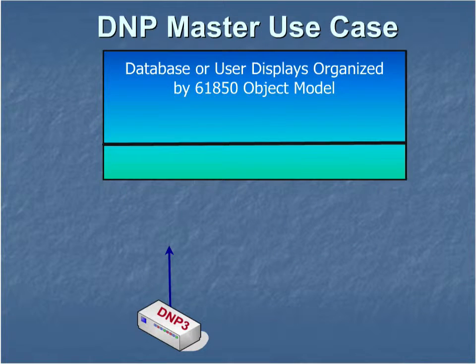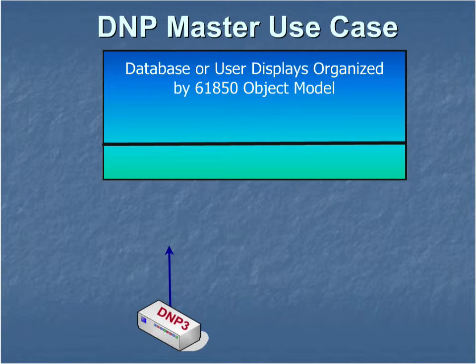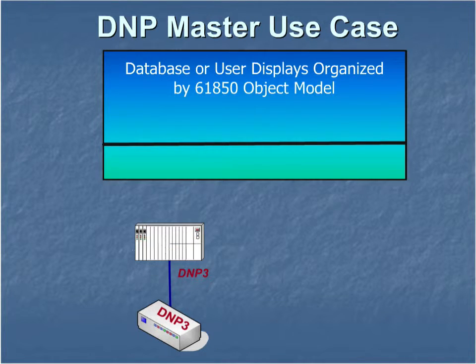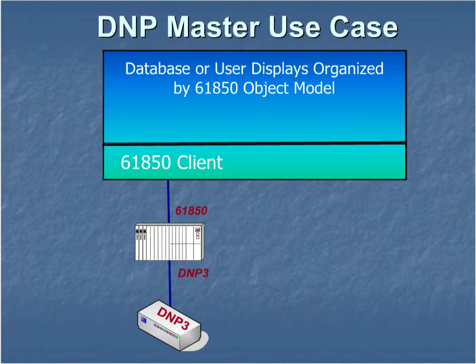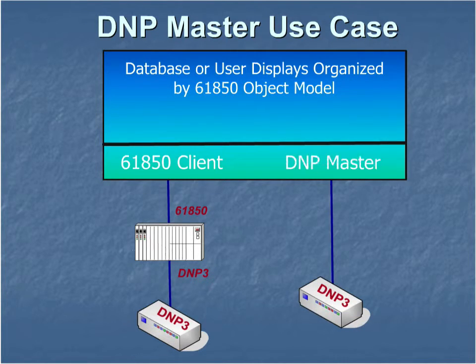If we want to display or organize the master database by IEC 61850 object model, in the past we would have used a protocol converter. DNP3 XML gives an equivalent solution without adding extra hardware to the system by providing the mapping as an extra layer in the software.